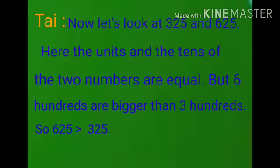Now let's look at 325 and 625. Here the units and the tens of the two numbers are equal, but 6 hundreds are bigger than 3 hundreds, so 625 is greater than 325.